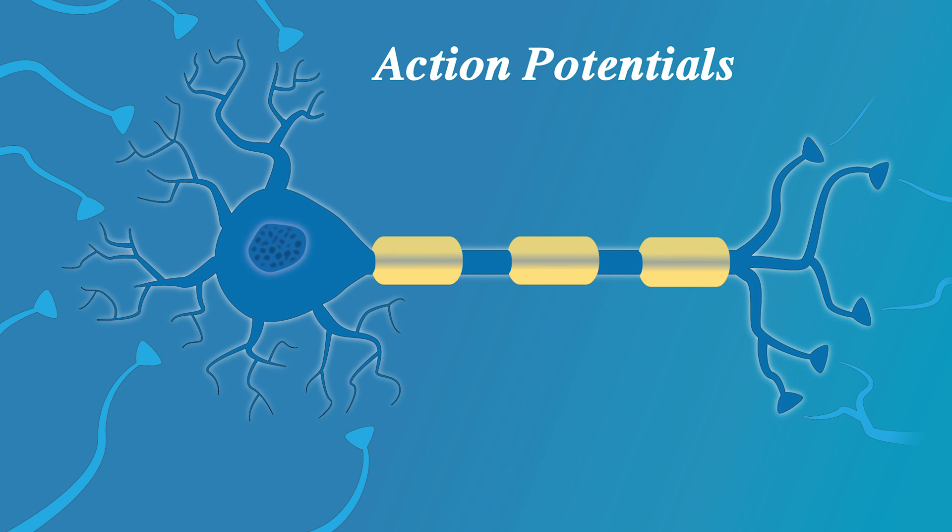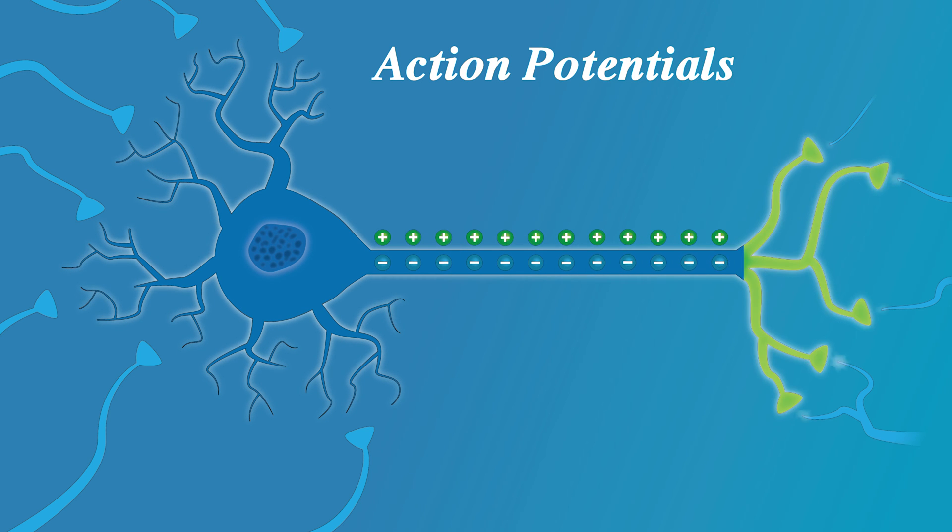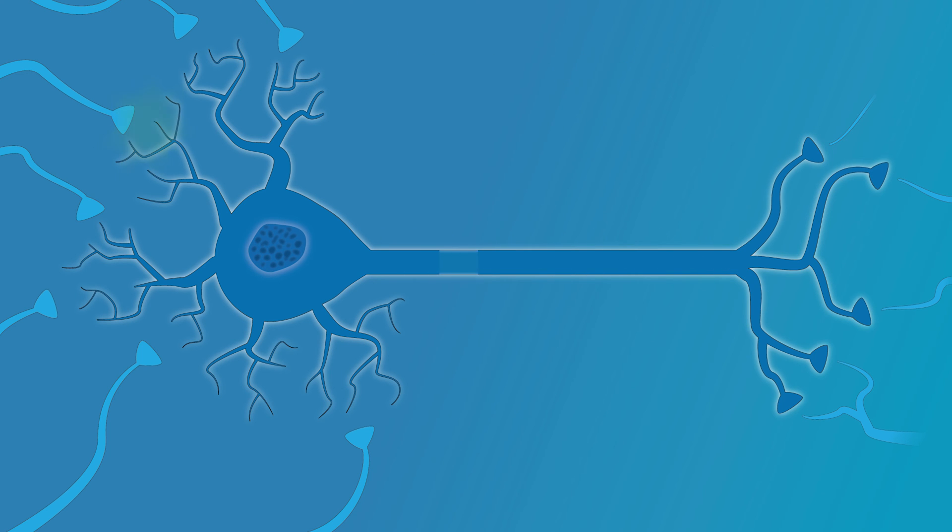Action potentials, also called nerve impulses, travel along neurons as a depolarization wave as ions enter and exit the neuronal membrane. At the same time, there is a change in the polarization of the membrane as neurotransmitters travel to the postsynaptic neuron.